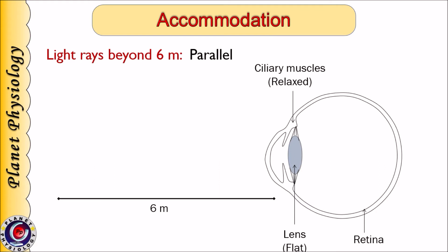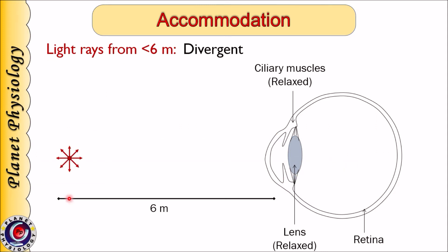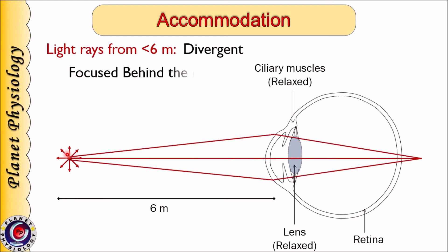Now coming to the second pupillary reflex — accommodation reflex. This picture shows the eyeball with relaxed ciliary muscles and hence the lens is flat. Normally, when eyes are relaxed, the parallel light rays are focused exactly on the retina and we can see a clear image of the object. Light rays will be parallel if the object is at 6 meters or beyond from the eyes. If the object is at less than 6 meters, the rays arising from it will be diverging.